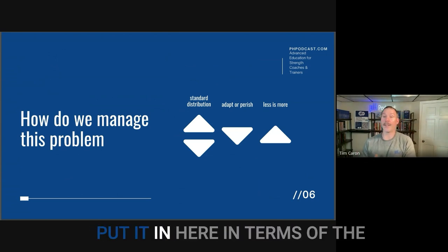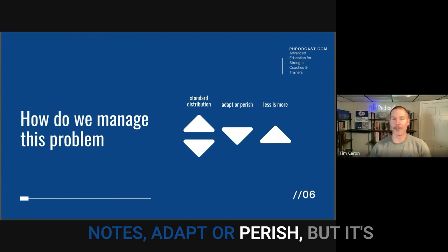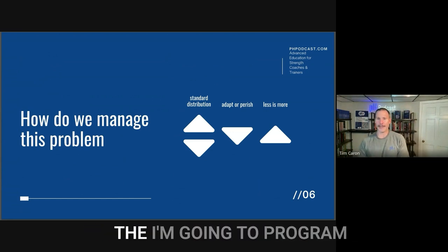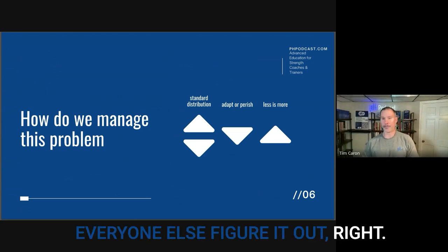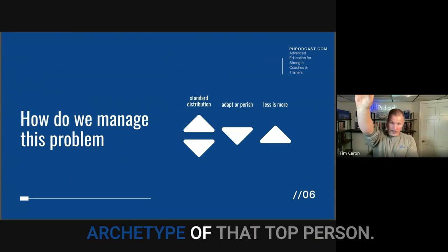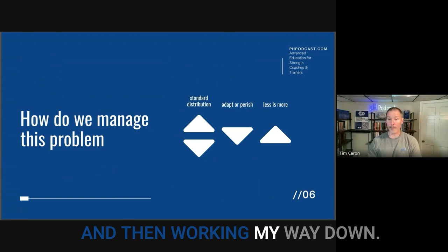Then another approach is the adapt or perish, the adapt or die method. I'm going to program to the highest common denominator, and then let everyone else figure it out. That I'm only programmed to the archetype of that top person, and then working my way down.